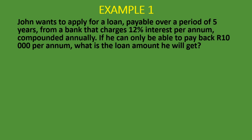In the first example, John wants to apply for a loan payable over a period of five years from a bank that charges 12% interest per annum, compounded annually. If he can only pay back 10,000 rand per annum, what is the loan amount he will get? We are given what he will be able to make as a payment at the end of every year, and the interest rate is 12% per annum compounded annually — so it's not compounded more than once a year.